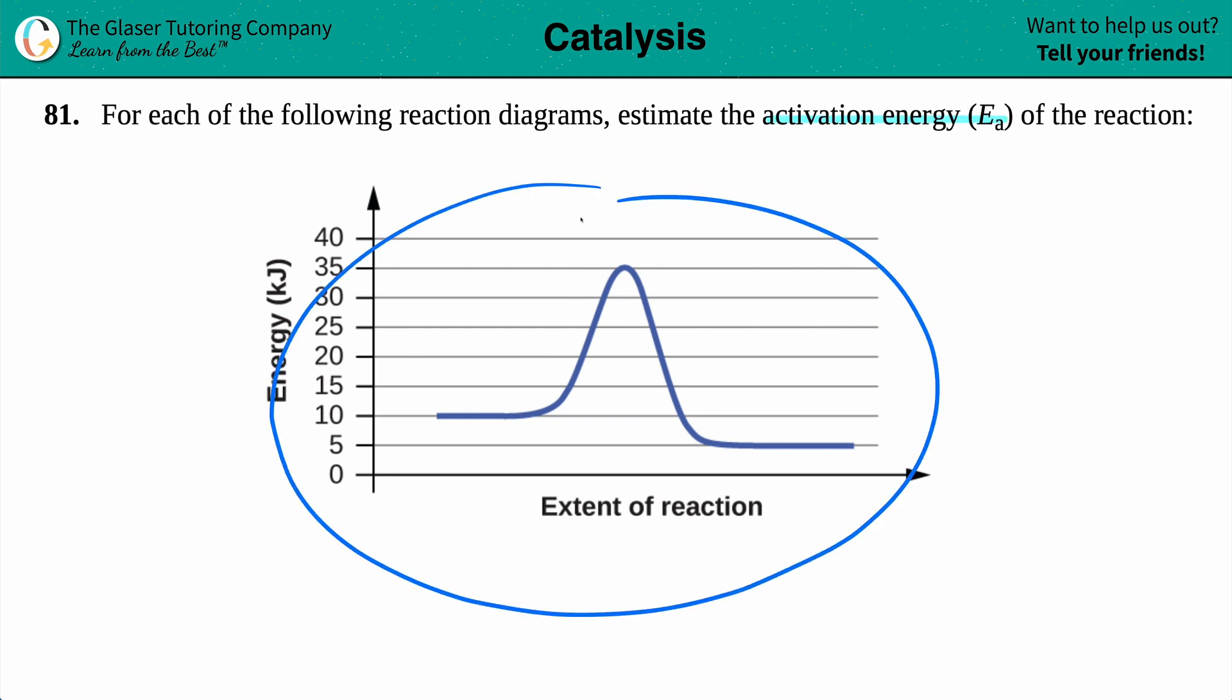We have our graph right here, and we just have to estimate the activation energy. Just know that how we read these energy diagrams, or reaction diagrams, always the left side is the reactant side. This is the amount of energy that the reactants have, about 10 kilojoules. And the right side, where it kind of teeters off to a straight line, is the products.